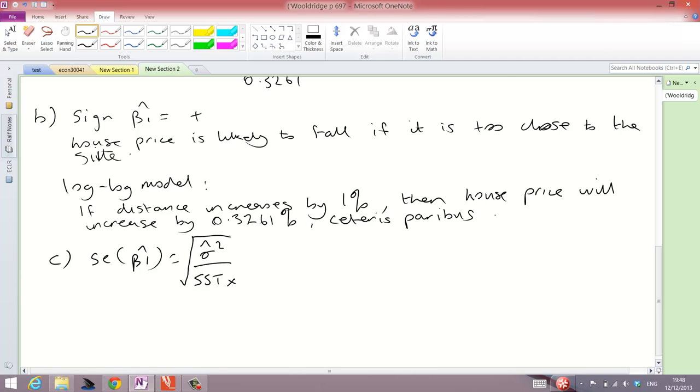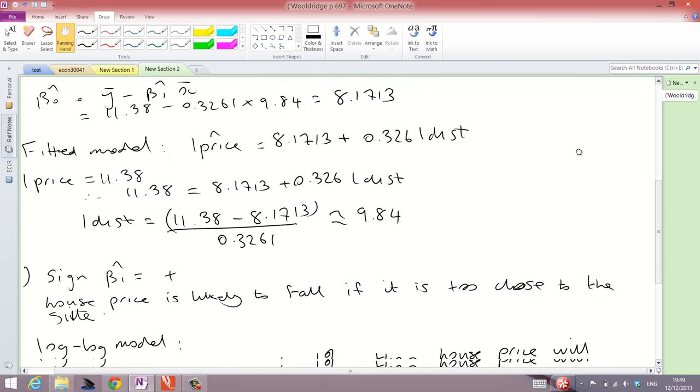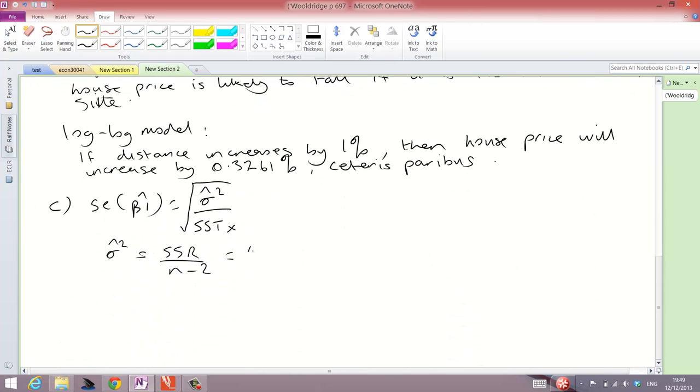But, we do have to calculate this estimate first. This is given as the residual sum of squares over our degrees of freedom n minus 2. So, the residual sum of squares is given in the question and is equal to 54.07. So, 54.07 over n minus 2. N minus 2 is 321 minus 2, which is 319. So, that is equal to 0.1695.